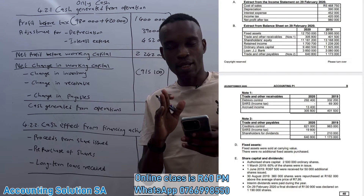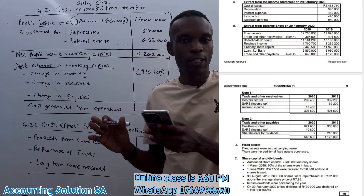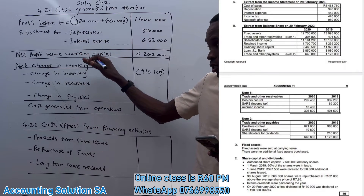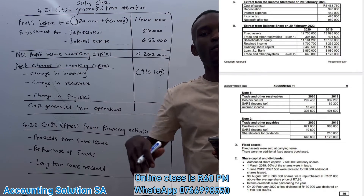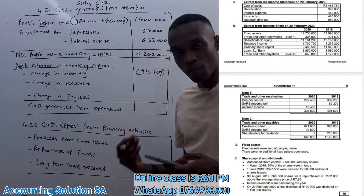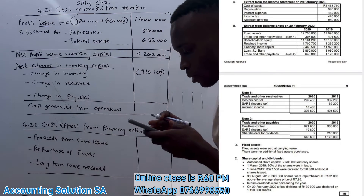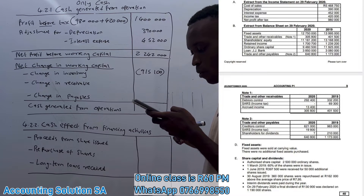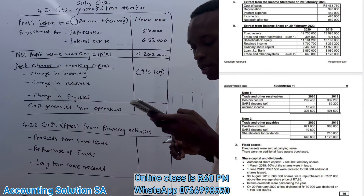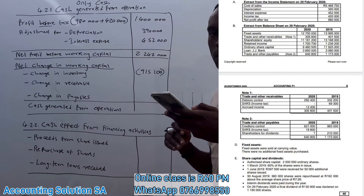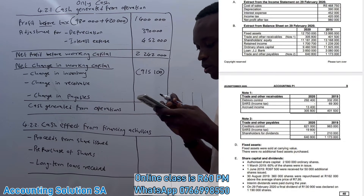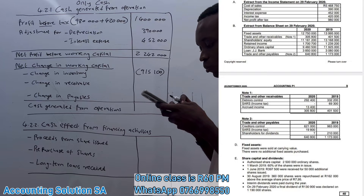For receivables, you must exclude anything containing tax — such as source income tax — because taxation paid is calculated separately in the cash flow statement. Including it here would cause duplication. From note 1, trade and other receivables include debtors control, source income tax, and accrued income. We exclude source income tax but include accrued income.